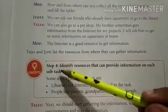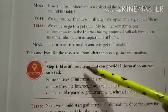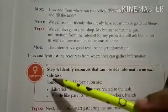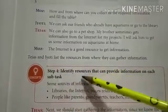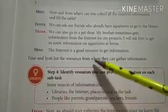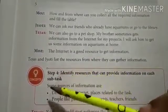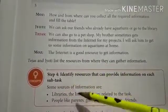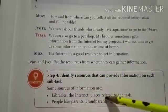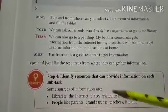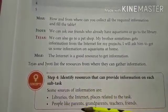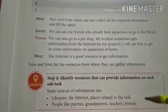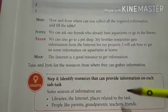Step 4 is: identify resources that can provide information on each subtask. Resources means the place from where you get the information. Some sources of information are libraries, internet, or places related to the task. And people like parents, grandparents, teachers, friends, etc. — they also provide us information.